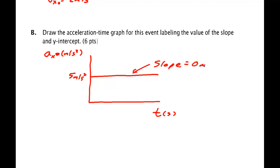Slope equals 0 meters per second cubed. The third derivative position with respect to time is often called the jerk. And it doesn't really have any physical meaning other than it's the slope of the acceleration time graph.